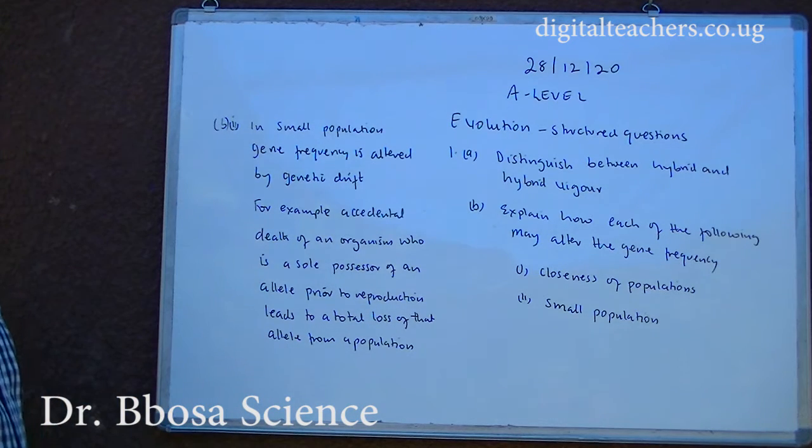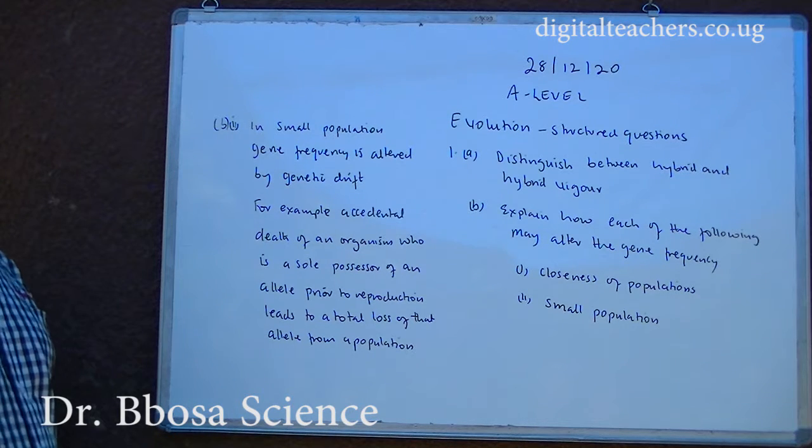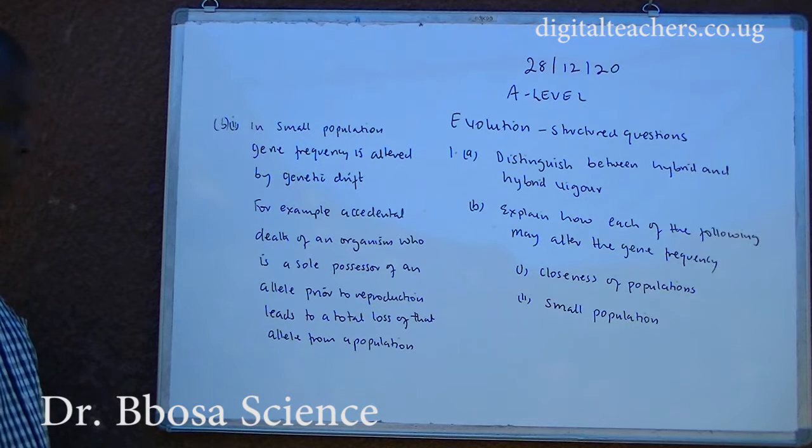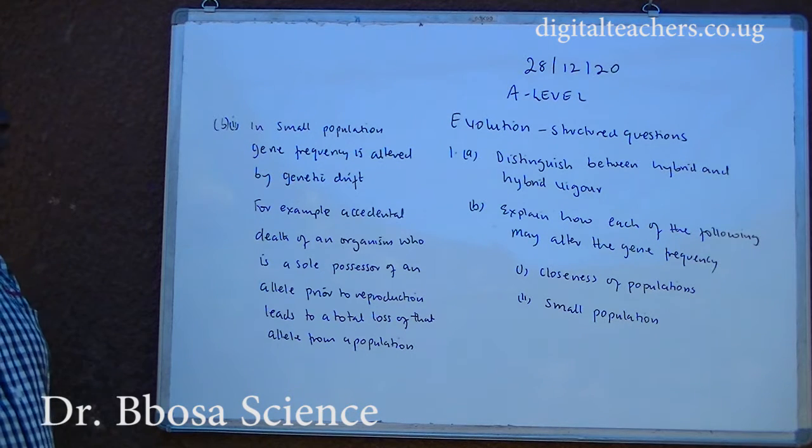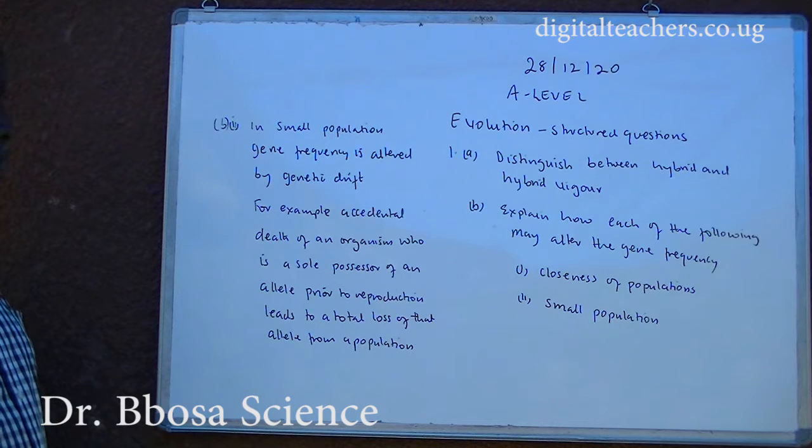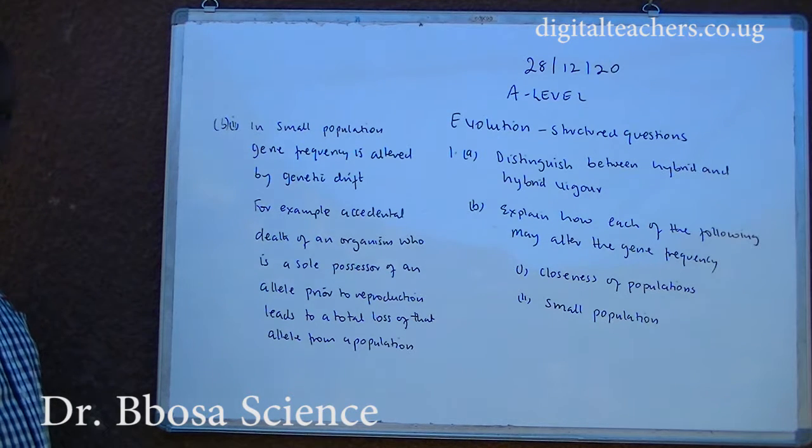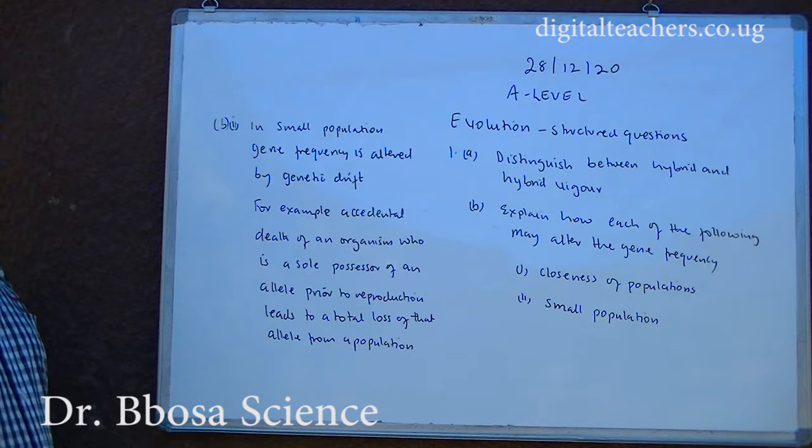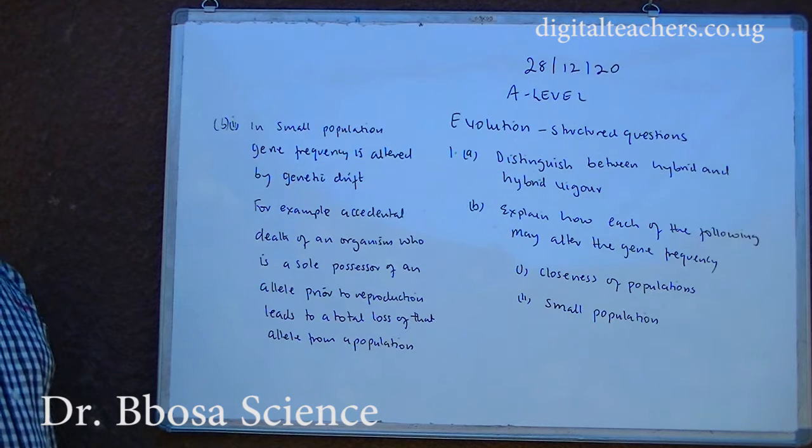B two, gene frequency is altered by genetic drift. For example, accidental death of an organism who is the sole possessor of an allele prior to reproduction leads to total loss of that allele from a population.